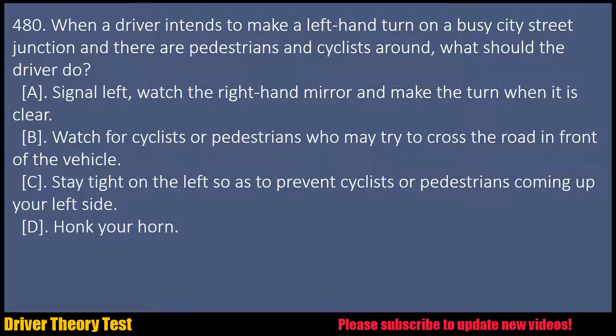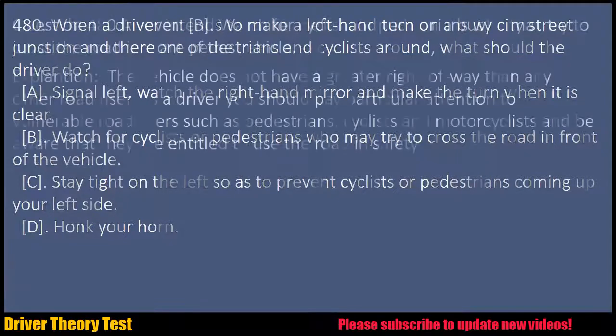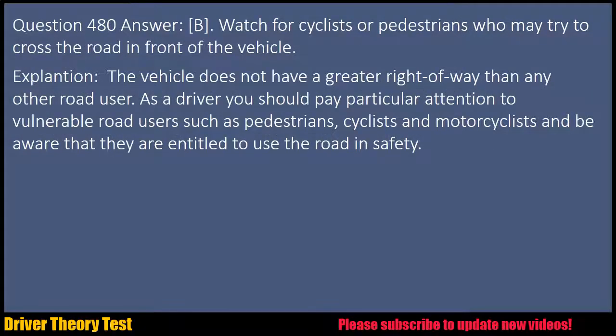Question 480: When a driver intends to make a left-hand turn on a busy city street junction and there are pedestrians and cyclists around, what should the driver do? A. Signal left, watch the right-hand mirror and make the turn when it is clear. B. Watch for cyclists or pedestrians who may try to cross the road in front of the vehicle. Explanation: The vehicle does not have a greater right-of-way than any other road user. As a driver you should pay particular attention to vulnerable road users such as pedestrians, cyclists and motorcyclists, and be aware that they are entitled to use the road in safety.